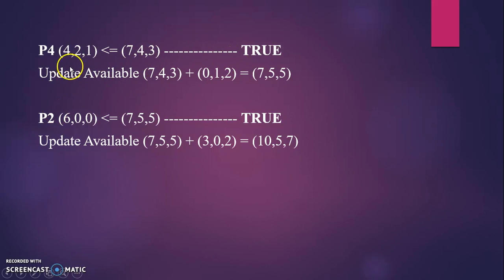Once you've already done the last process, P4, then go to the process that was false. Check again with the new availability you currently updated. The need for P2 is (6, 0, 0) less than or equal to (7, 5, 5), which is the current updated available. Once you've checked and the statement is true, write true and update the available.